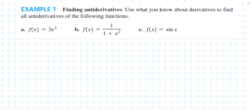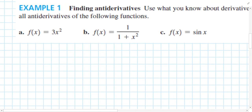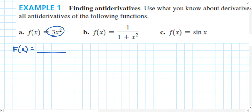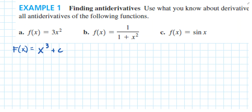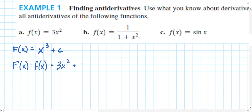Let's find the antiderivative of 3x². The derivative of x³ is 3x², so the antiderivative of 3x² is x³ — plus C, because we don't know the arbitrary constant. We can confirm: the derivative of capital F equals 3x² plus 0, which is just 3x².